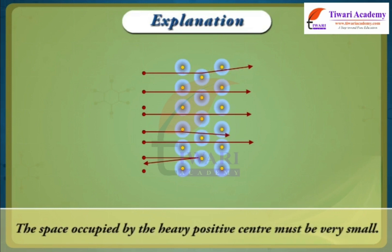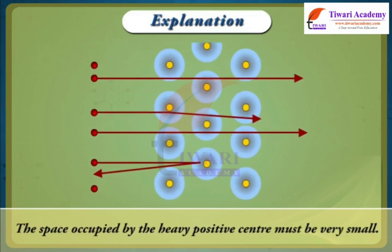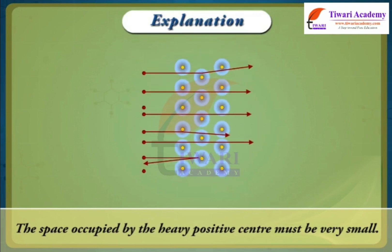Alpha particles which make head-on collision with heavy positive center are deflected through large angles. Since the number of such alpha particles is very small, the space occupied by the heavy positive center must be very small.